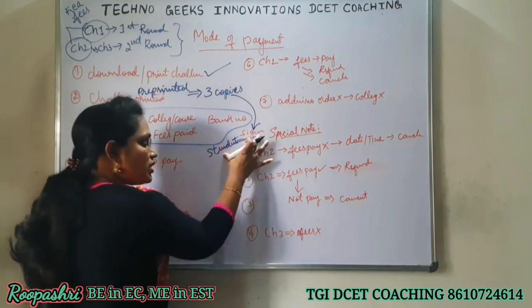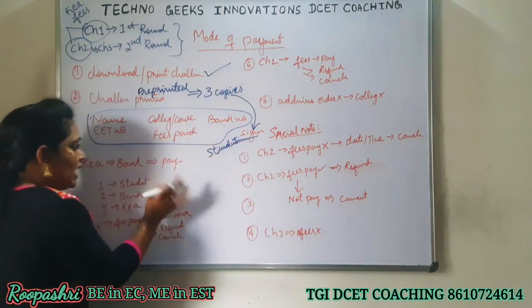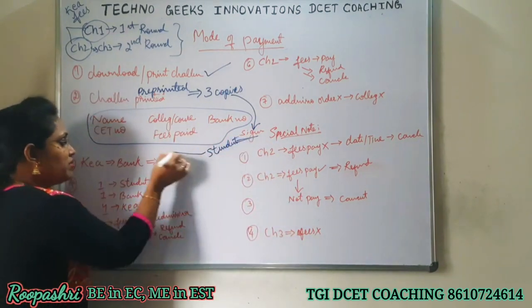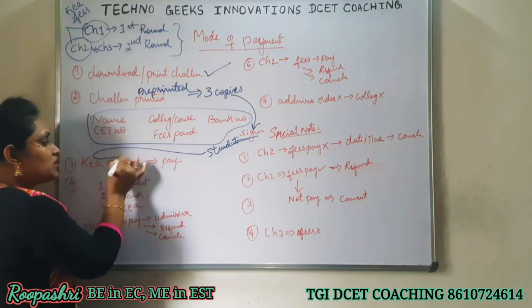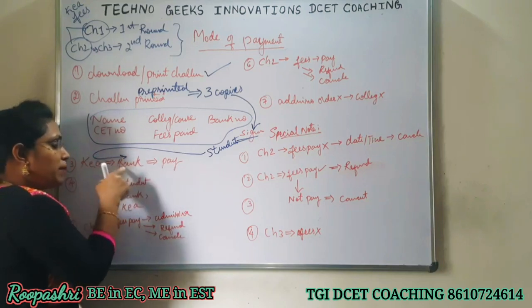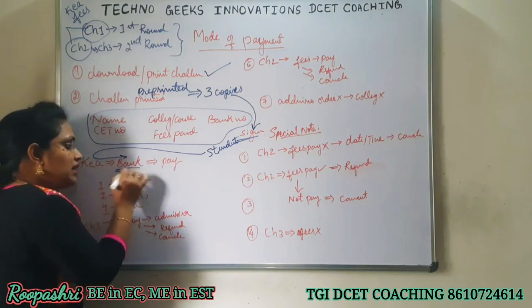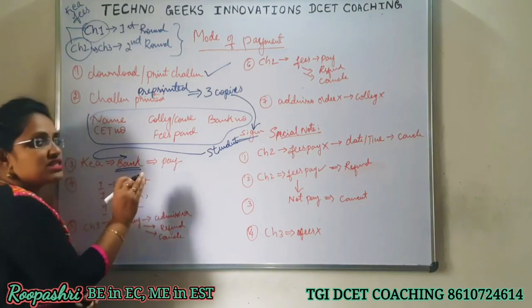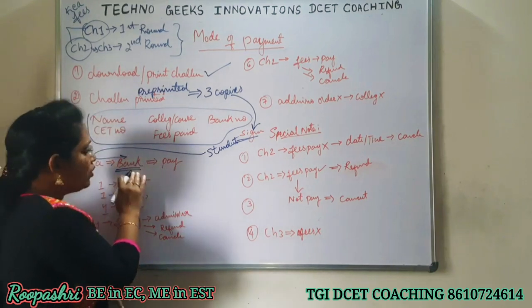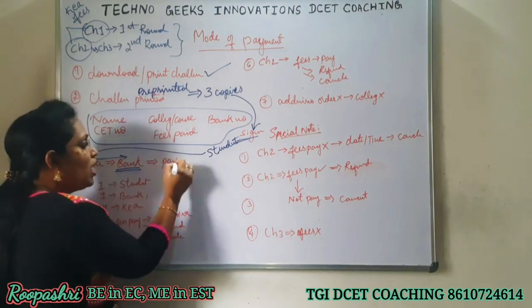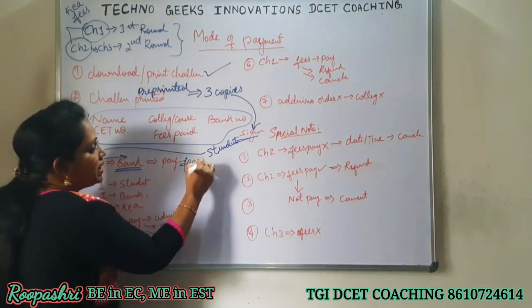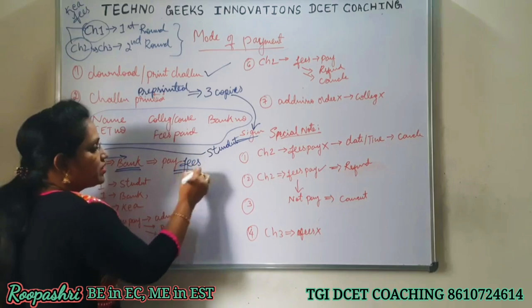Once all that information is verified, sign on all three copies - student signature must be done. After the student signature, go to the nearest bank mentioned by K.E.A. and pay the amount there.